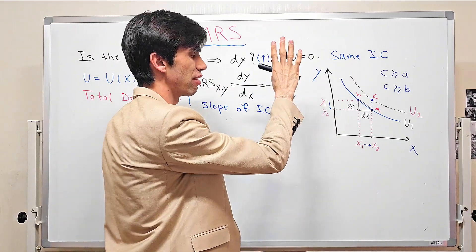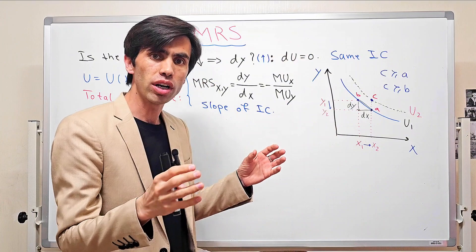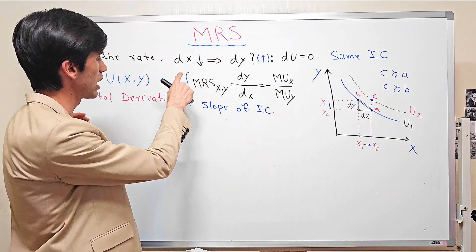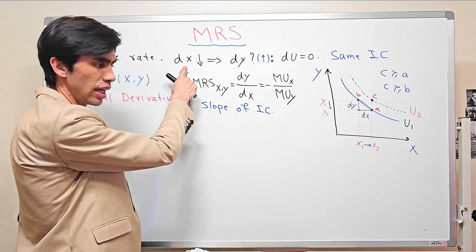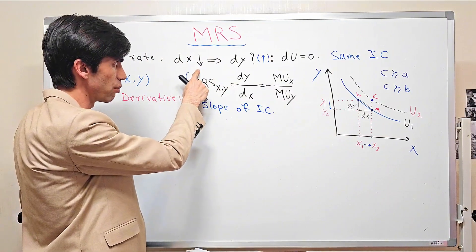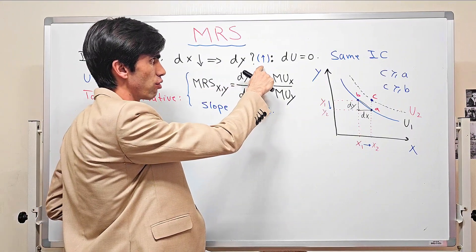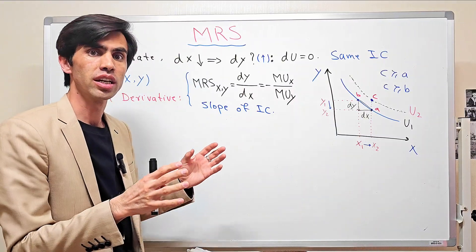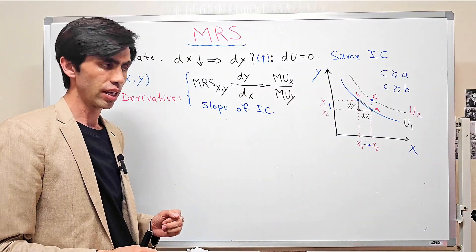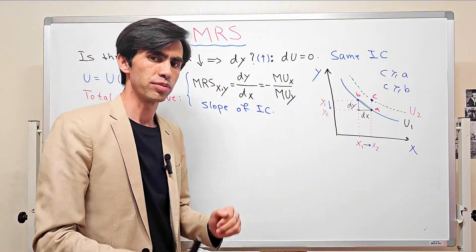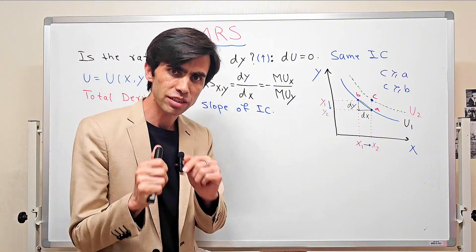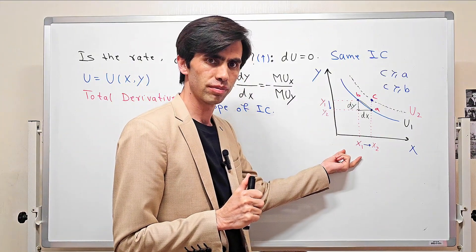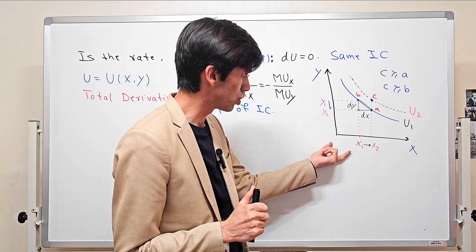keep the overall utility level fixed, or in order to stay on the same indifference curve. For example, when we are going to reduce the consumption of x, by how much should we increase the consumption of y in order to keep our utility level fixed? That means there is no change in utility. So this is the marginal rate of substitution. Let me explain this concept using a graph.